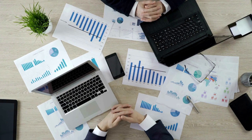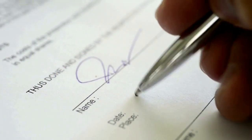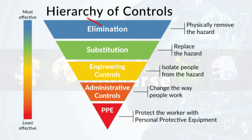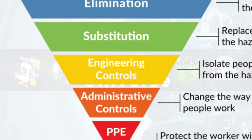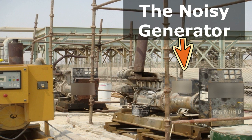Replacing with a silent generator could be the best option for noise reduction in the long term, but it involves cost impact which may require further consultation and approval from senior management. If both elimination and substitution are not practicable or feasible at your workplace, then you move to the next level: Engineering Control. As seen in the hierarchy of control chart, engineering control is about keeping people away from hazards. Let's explore what measures can be taken to isolate people from the noise hazard.